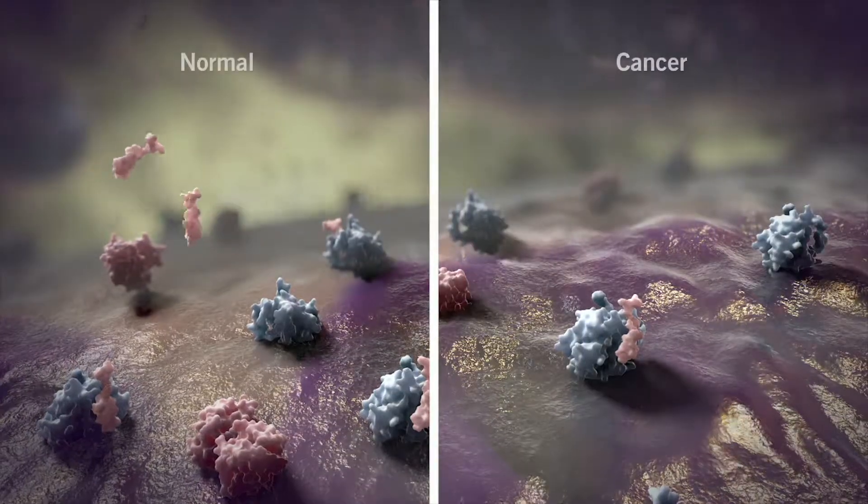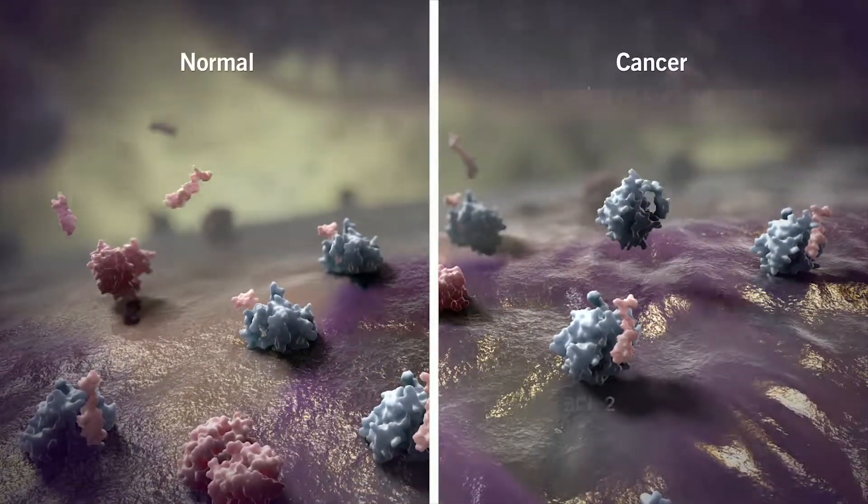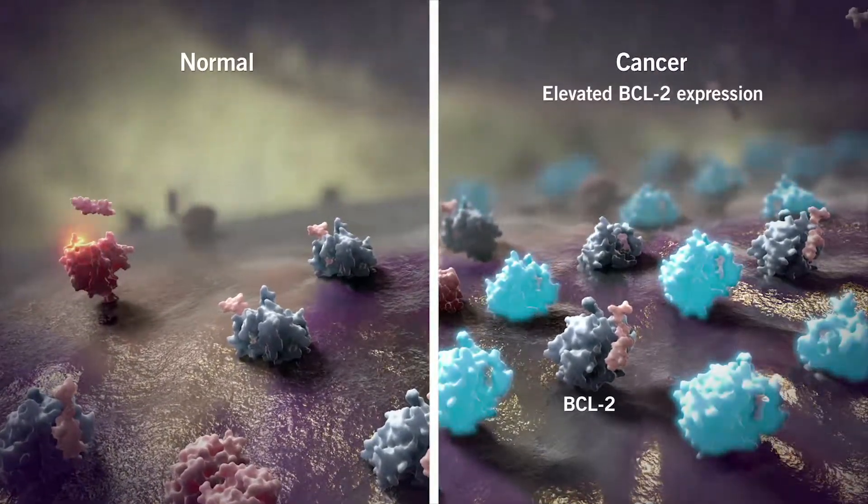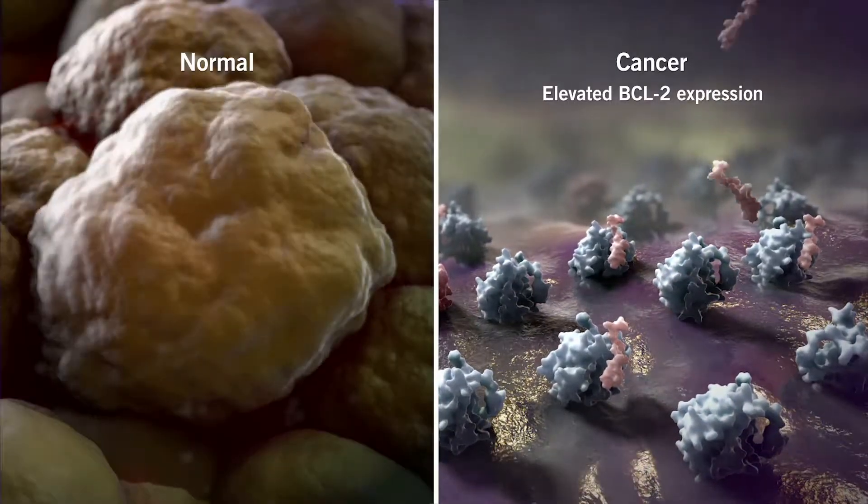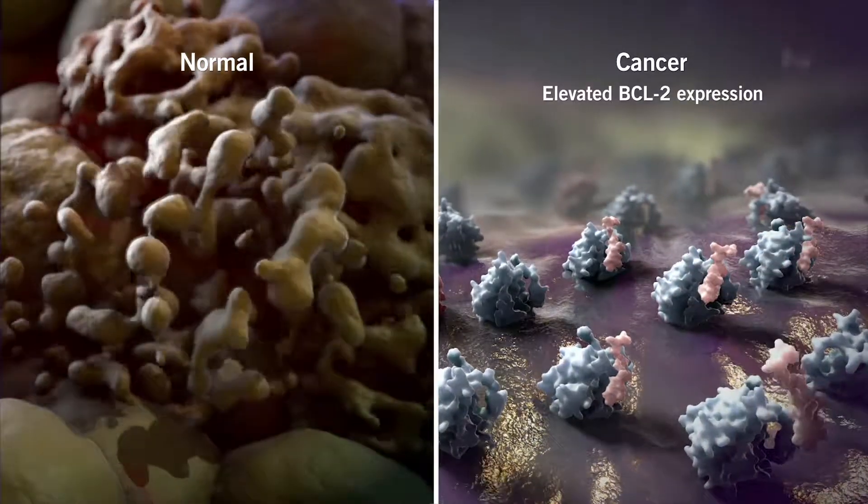In contrast, malignant cells will often express more BCL2 to keep pro-apoptotic members in check. This prevents cancer cells from eliciting an apoptotic response.